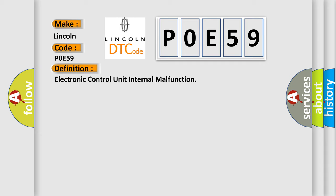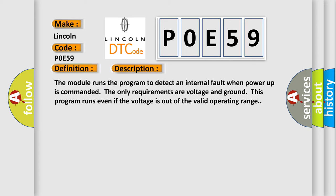And now this is a short description of this DTC code. The module runs the program to detect an internal fault when power-up is commanded. The only requirements are voltage and ground. This program runs even if the voltage is out of the valid operating range.